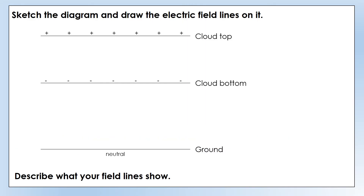What I'd like you to do is sketch a diagram of a very simple model. The whole top section is where the cloud is. I've simplified it so the top of the cloud is positive and the bottom is negative, but the amounts of charge cancel each other out so the cloud is neutral overall. The ground is also fairly neutral. Sketch this diagram, then add field lines to show what the field will look like both in the cloud and on the ground. Then describe to me what your field lines are showing.